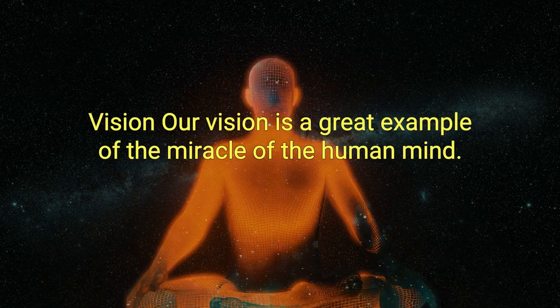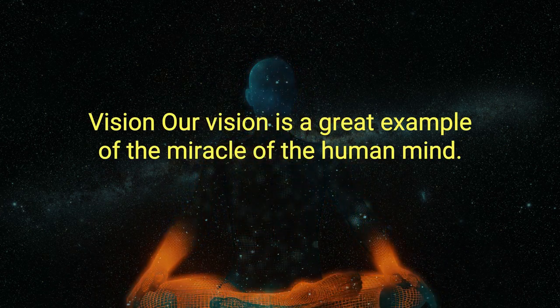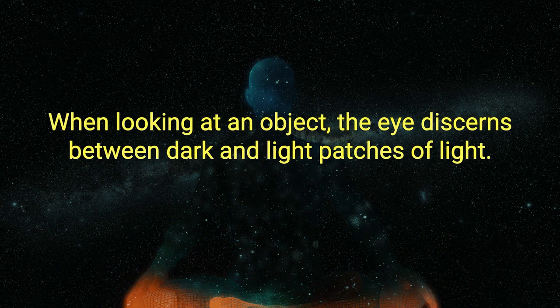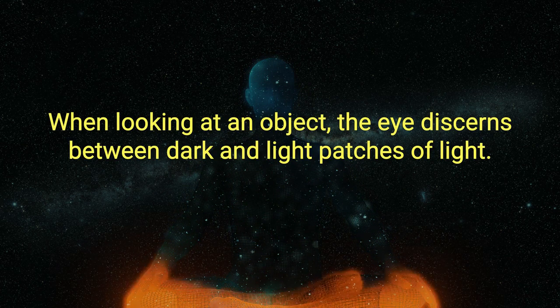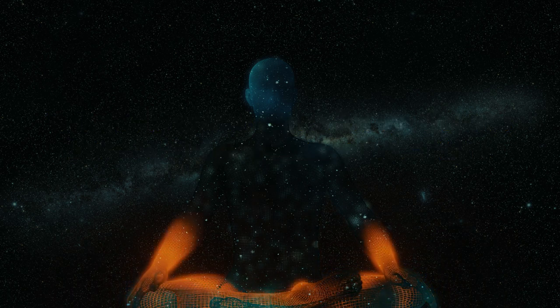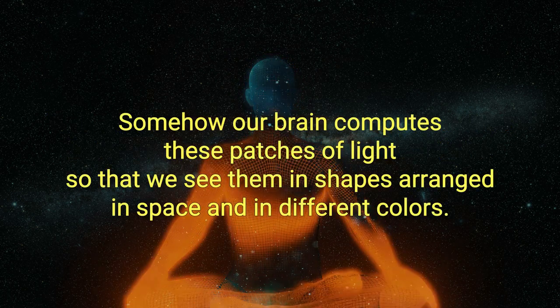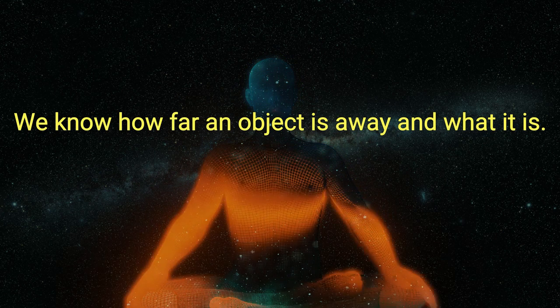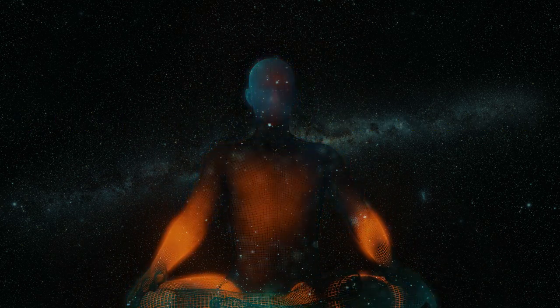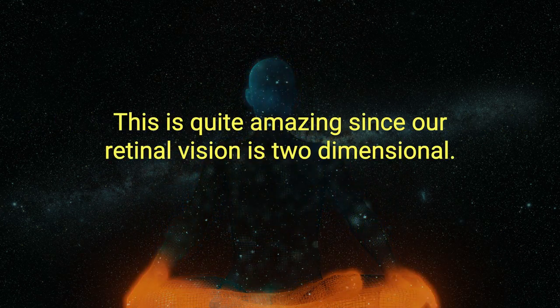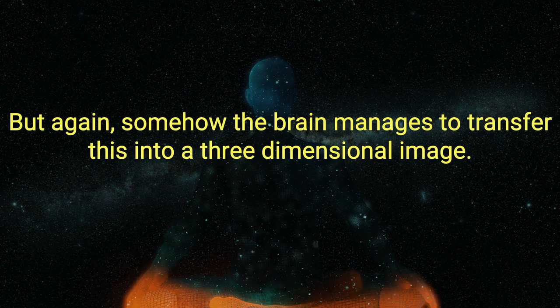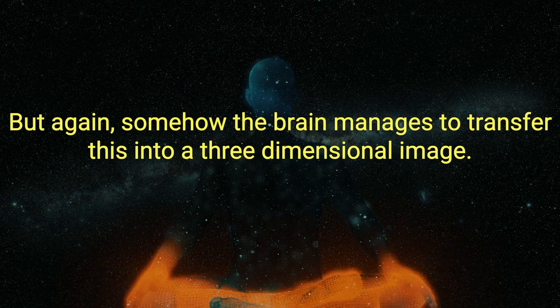Vision. Our vision is a great example of the miracle of the human mind. Let us start with the basics. When looking at an object, the eye discerns between dark and light patches of light. Somehow, our brain computes these patches of light so that we see them in shapes, arranged in space, and in different colors. We know how far an object is away and what it is. This is quite amazing, since our retinal vision is two-dimensional. But again, somehow the brain manages to transfer this into a three-dimensional image.